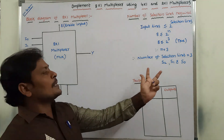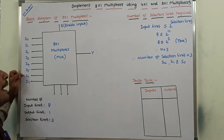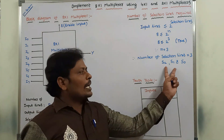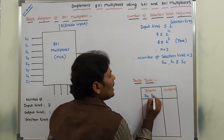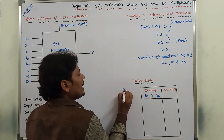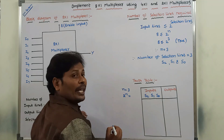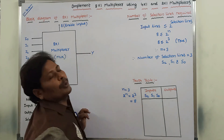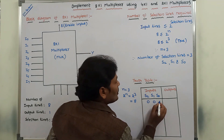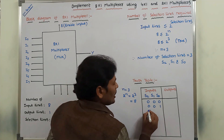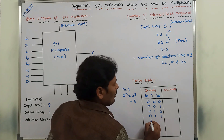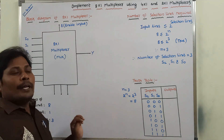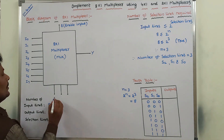By using these three selection lines we have to select only one input, and that input is sent as the output. With three selection input lines, how many input combinations are possible? n is equal to 3, so 2 power 3 equals 8 input combinations. Those 8 combinations are: 000, 001, 010, 011, 100, 101, 110, 111 for the selection lines S2, S1, S0.